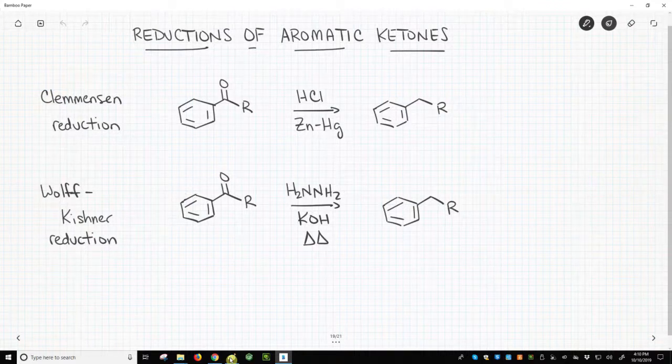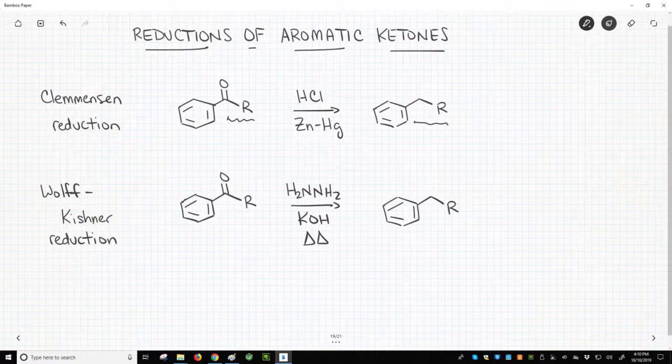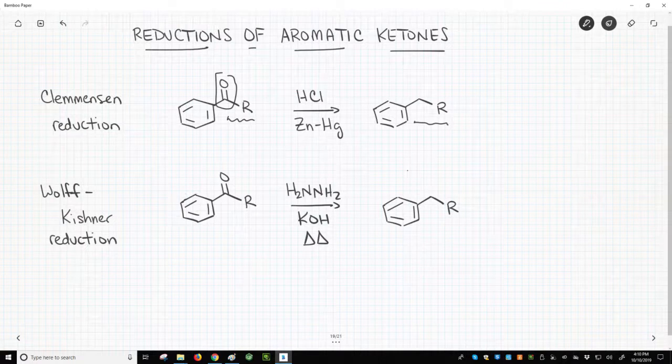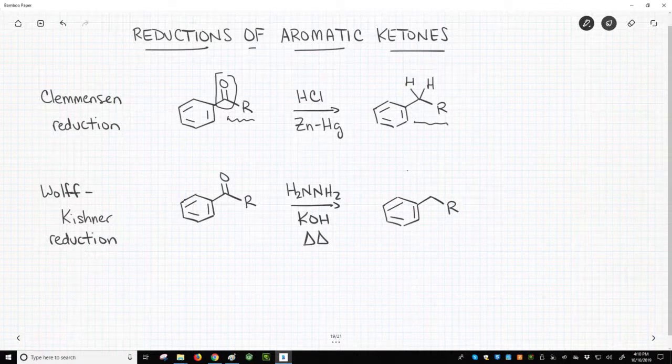Both reactions convert the acyl group on a benzene ring to an alkyl group. Since the central acyl carbon in the molecule goes from having two bonds to an electronegative oxygen to two bonds to hydrogens, these reactions are classified as reductions.